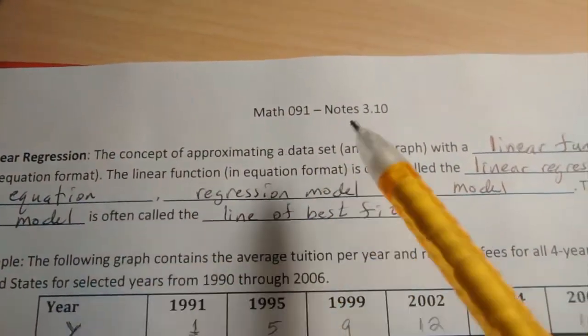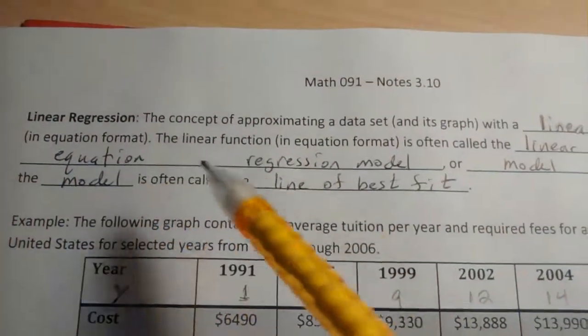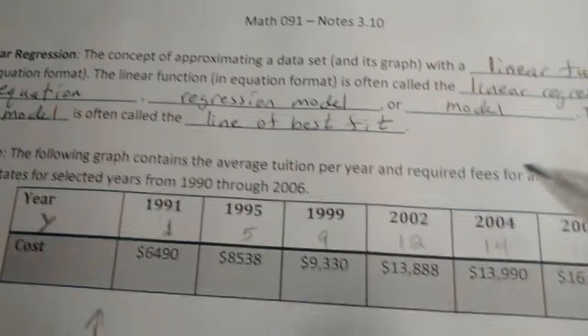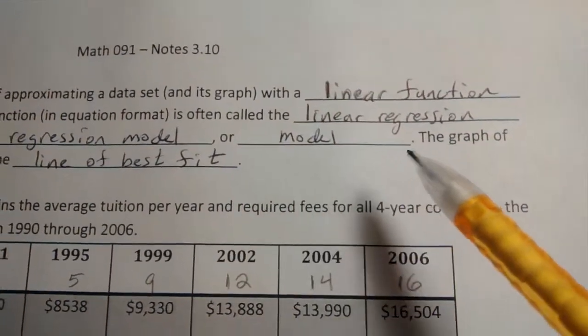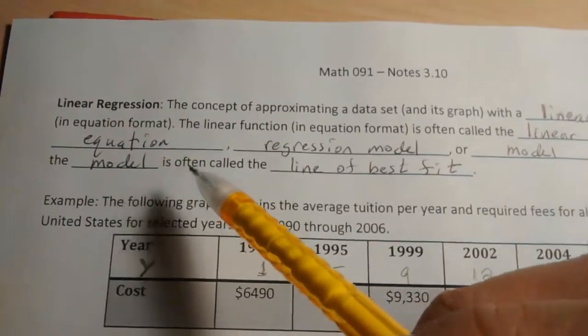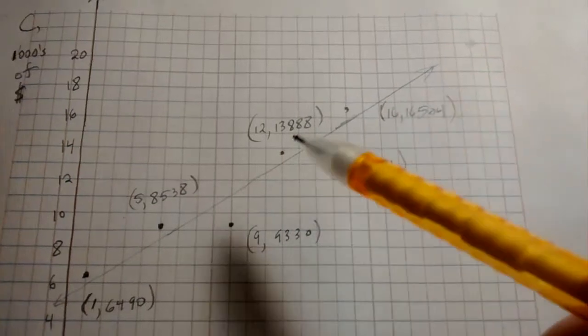The linear function in equation format is often called the linear regression equation. We'll call it the regression model. You'll also see and read about just calling it the model. The graph of the model is often called the line of best fit. So this line of best fit here is this guy.